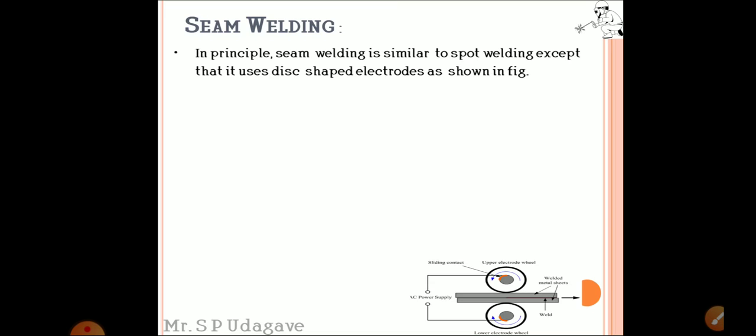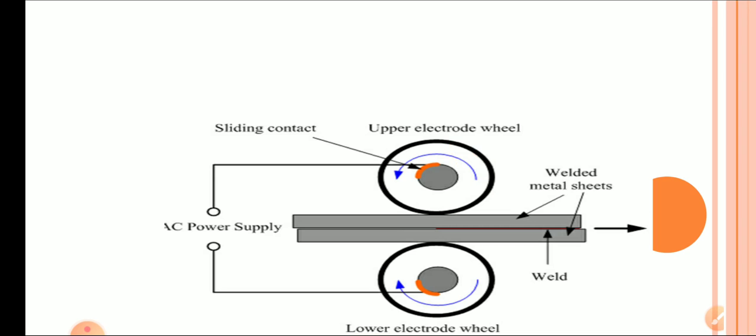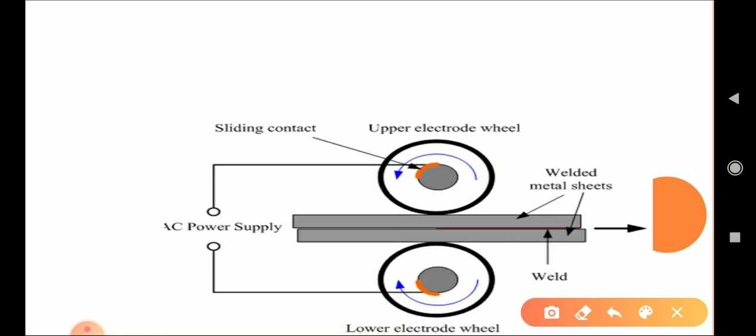Seam welding has a principle similar to spot welding except that disc-shaped electrodes are used as shown in the figure. In this figure we can see the electrodes - the upper electrode and the lower electrode - used are in the form of wheels. We can maintain a specific distance between the wheels to place the work, the welded sheets.